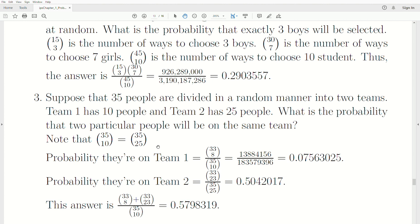Also, two people, say John and Sally, if they're on team 1, they can't be on team 2. And if they're on team 2, they can't be on team 1. So these are mutually exclusive events. So we can find the probability for them to be on team 1 and then find the probability of them being on team 2, and then just add them. And then that's the answer.